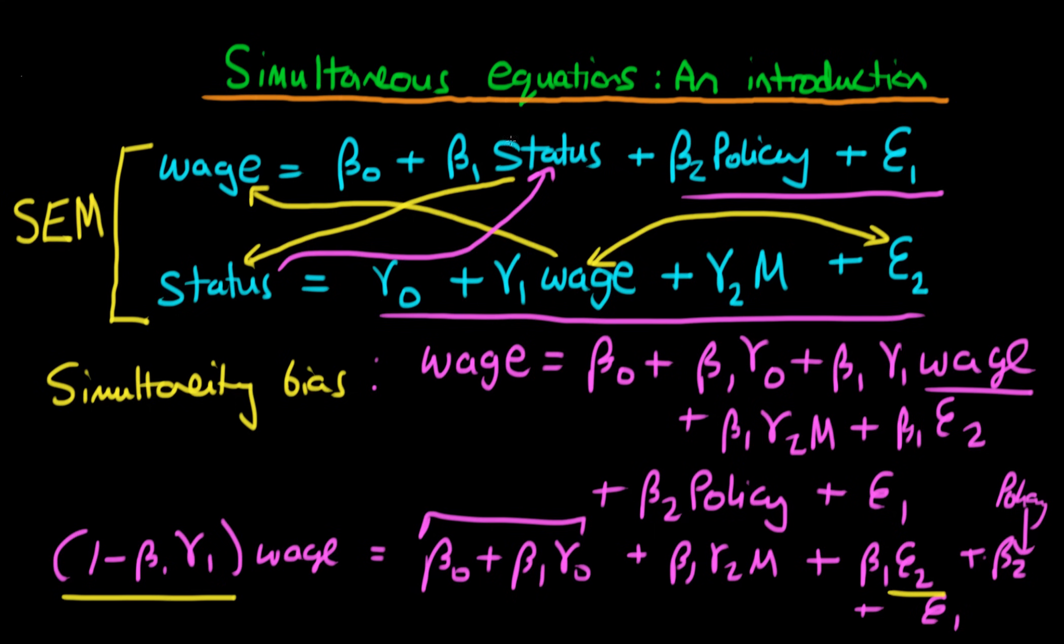And furthermore, if we were to do exactly the same thing, but now substituting in for wage from the first equation into wage for the second equation, we would also find that status is correlated with the error term epsilon 1. So OLS estimation of both of these equations would be both biased and inconsistent. So it's not a very good thing to do, essentially.